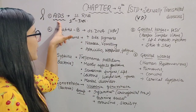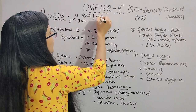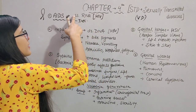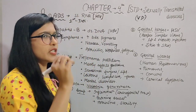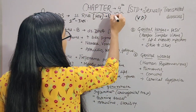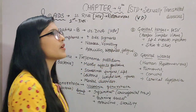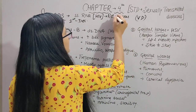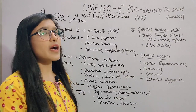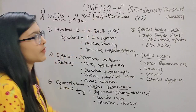AIDS is caused by a virus called HIV — Human Immunodeficiency Virus. This virus has single-stranded RNA as its genetic material. This virus belongs to a category called Retrovirus. So HIV, which is a retrovirus with single-stranded RNA, is the causative agent of AIDS.